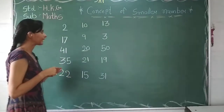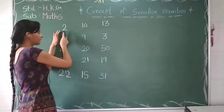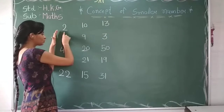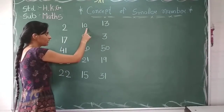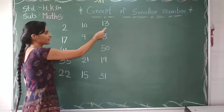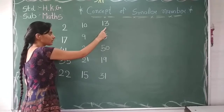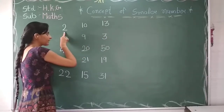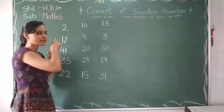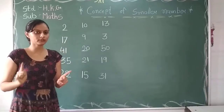So, we are going to learn about the first number. This is 2. This is 1, 0, 10. This is 1, 3, 13. So, 2 is 1, 3, 13. So, numbers are 1, 0, 100.